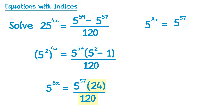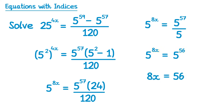We can simplify the right hand side: 5 to the 57 divided by 5 to the power 1 — subtract those indices — equals 5 to the power 56. So we have 5 to the 8x equals 5 to the 56. Now we've written them as single powers of 5, so 8x equals 56. Dividing by 8 on both sides gives x equals 7.